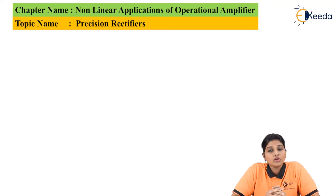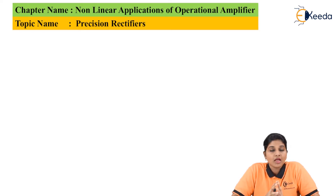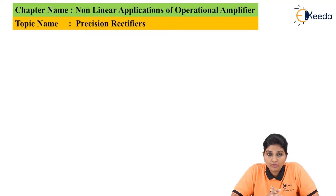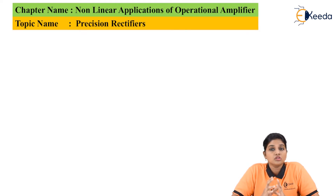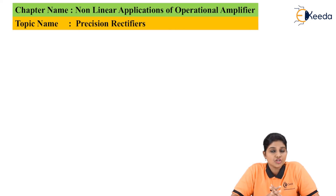Now let's understand what do you mean by a precision rectifier. The problem with a basic diode rectifier is that the diode has a cutoff voltage of 0.6V for a silicon diode or 0.3V for a germanium diode. So if the voltage is below 0.6V or 0.3V, it is not possible for the diode rectifier to rectify it and provide DC output. In that case, precision rectifiers are used.